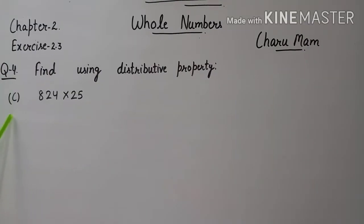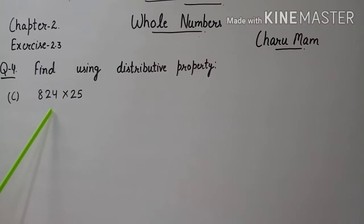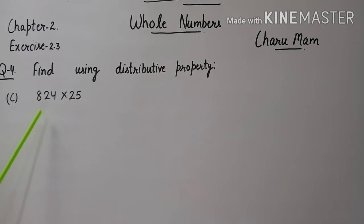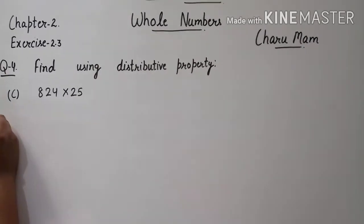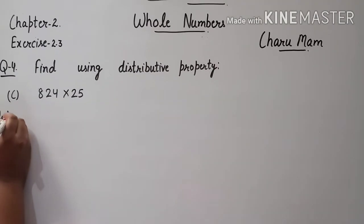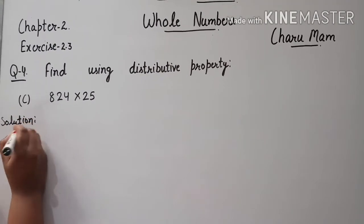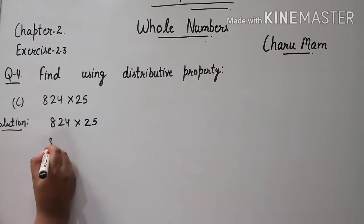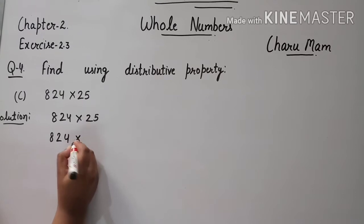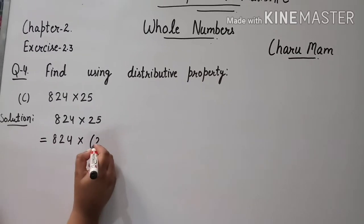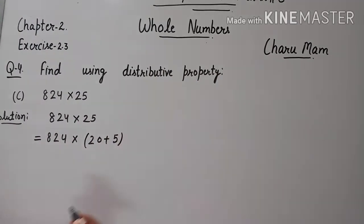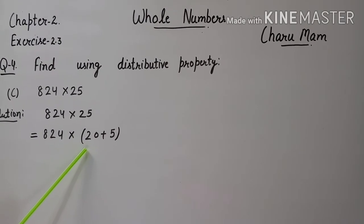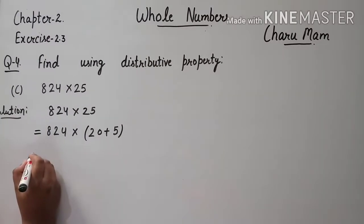Now, question 4 C part: 824 multiplied by 25. इसे भी हम distributed property apply करके solve करेंगे. So, we start solution. 824 को हम as it is write करेंगे. 25 को हम 20 plus 5 की form में write करेंगे. अब हम 824 को 20 से multiply करेंगे, then हम इसे 5 से multiply करेंगे.